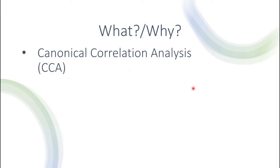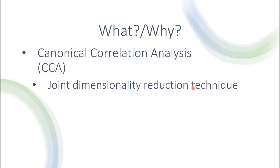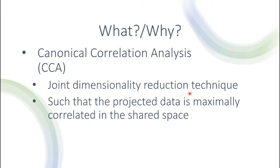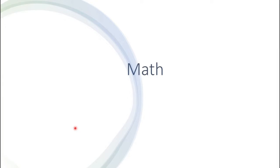So canonical correlation analysis is a joint dimensionality reduction technique that reduces dimensions such that the projected data in the new space is maximally correlated — which makes sense given the name canonical correlation analysis. Let's continue to understand the mathematical concepts.